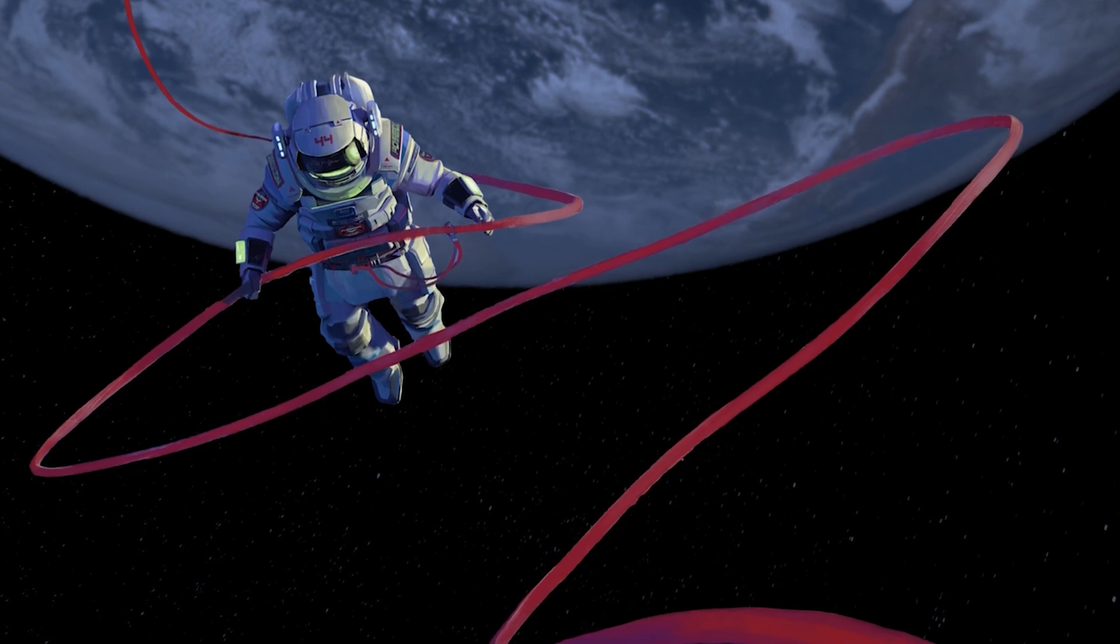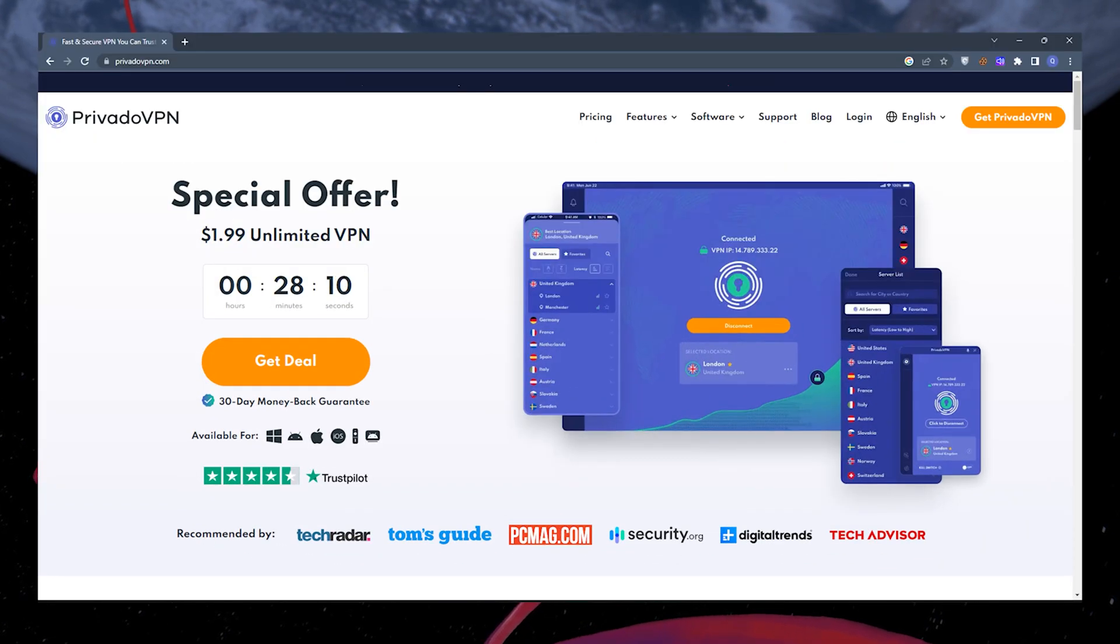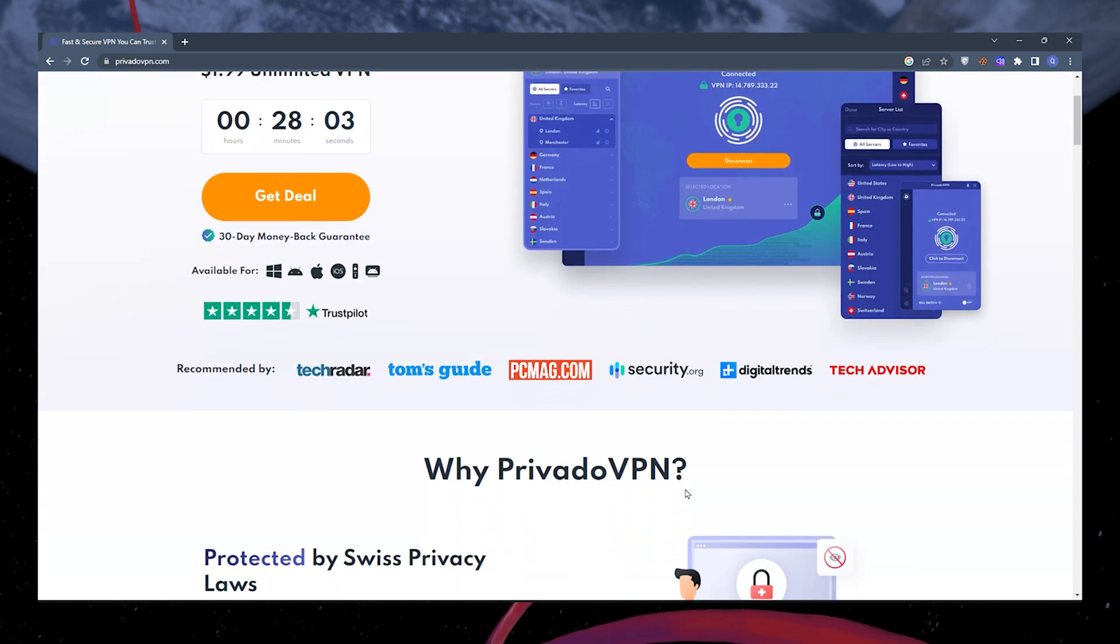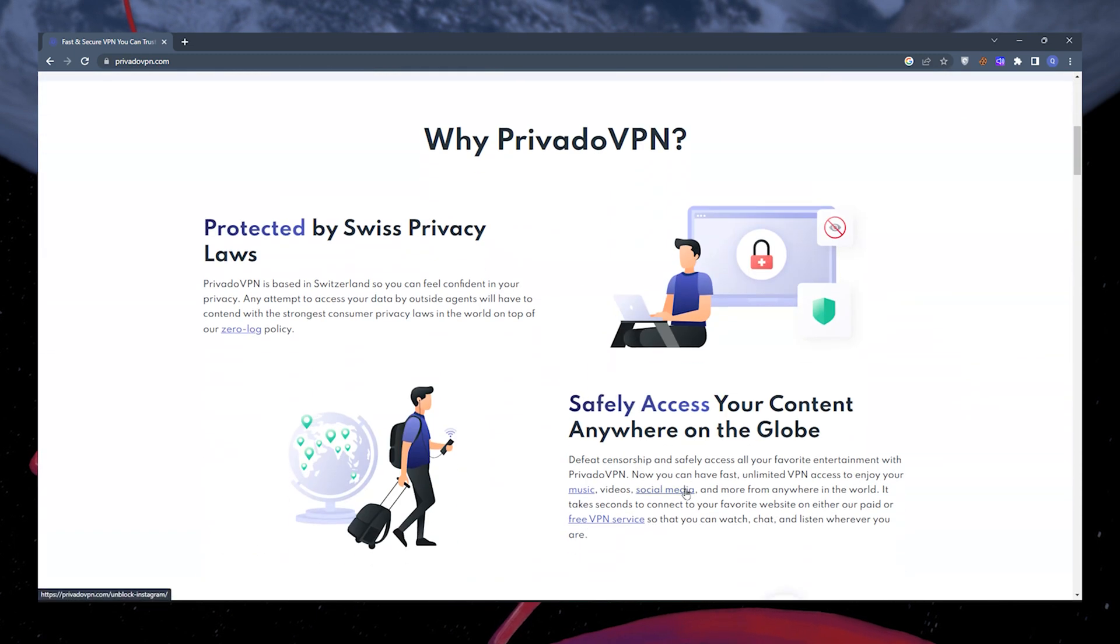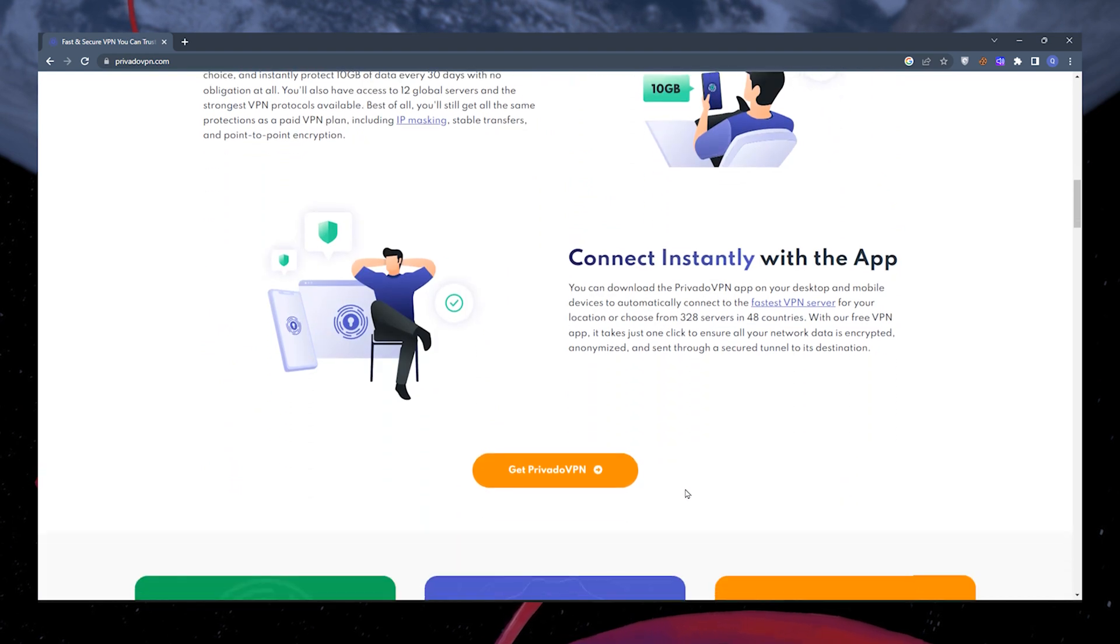Another workaround to fix the Teleport failed error is to use a VPN like PrivadoVPN to set your location. Sometimes, certain games have restrictions based on your geographic location, and this can trigger the error. By using PrivadoVPN, you can change your virtual location and potentially bypass these restrictions.